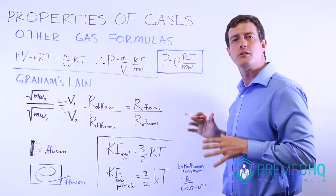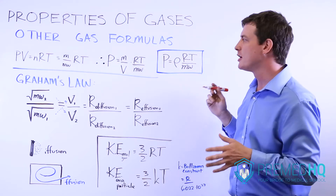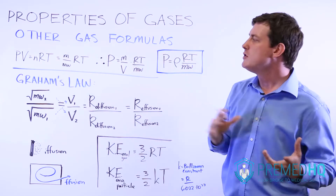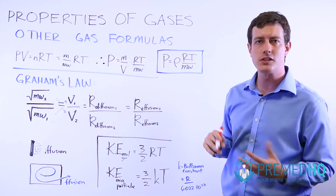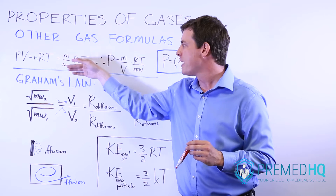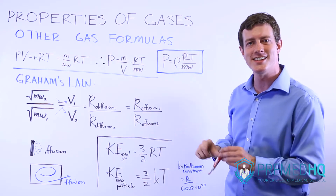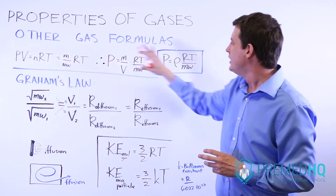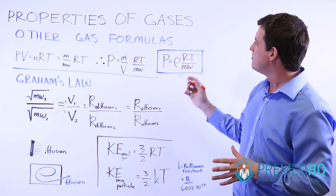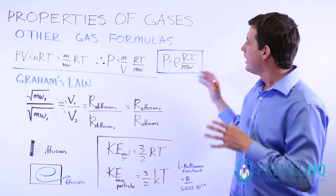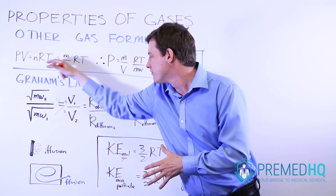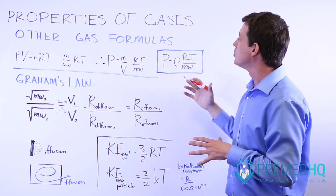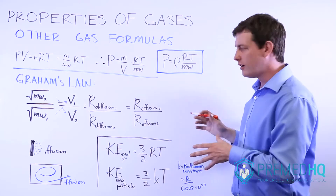This is not one you'll likely be directly responsible for, but it is important to be able to go from number of moles to mass over molecular weight, and to recognize that mass per unit volume is density. This is a simple way of seeing how you can move from the ideal gas equation into other variations involving different units, expressing pressure in terms of density and molecular weight of individual particles.